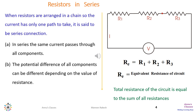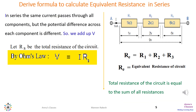In a series connection, the potential difference across all components will be different because the current I is constant. To maintain Ohm's law, the potential difference across R1, R2, and R3 will each be different. If we add up the potential differences V1 across R1, V2 across R2, and V3 across R3, that sum equals the total potential difference of the circuit.